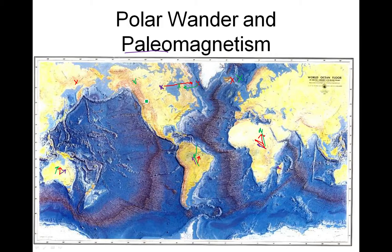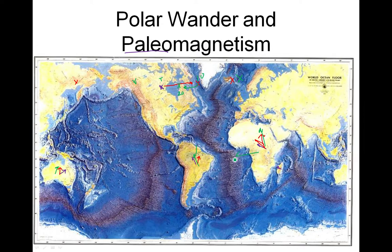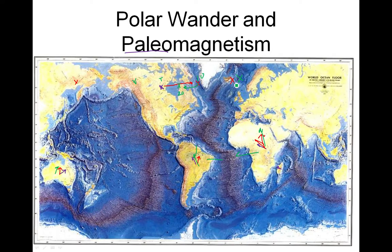If this had been after Wegener and Hess, they would have realized it wasn't the North Pole that was wandering — it was the continents that were wandering. If you reassembled Pangaea and put the continents all back together, lining up the different time periods, all of these apparent North Poles would merge into one North Pole. It proved that all the continents were together, because all that iron in those past volcanic rocks pointed to the same place.